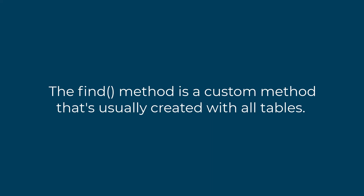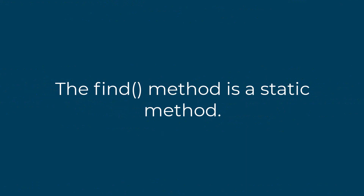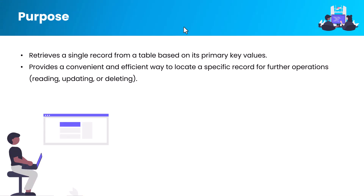This particular custom find method is usually created for every table. The find method returns a specific record based on the primary key, or if you have any other unique key, then based on that key. You have to remember that you have to create this method as a static method. The purpose of this method is to retrieve a single record from a table based on its primary key value or unique key.